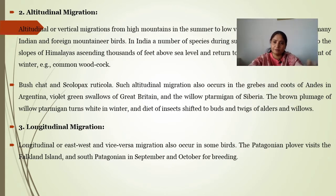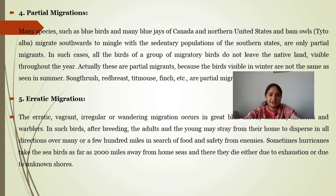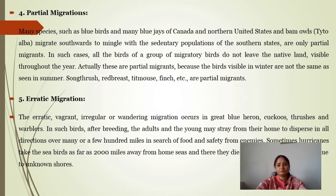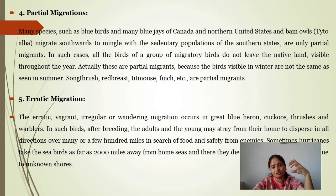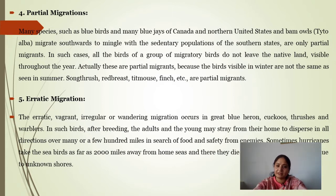Longitudinal migration is east-to-west migration — from east to west or from west to east. The Patagonian plover visits the Falkland Islands and southern Patagonia in September and October. Partial migration occurs in a particular direction. Many species such as bluebirds and blue jays of Canada and northern U.S. migrate southward to mix with the sedentary population of the southeastern region. They are only partial migrants — all birds of the group do not leave the native land and are visible throughout the year.